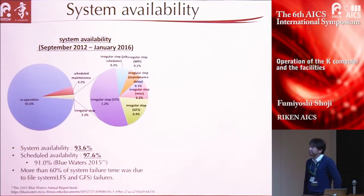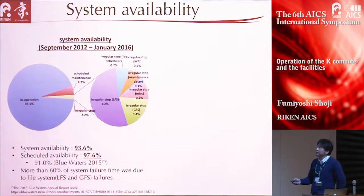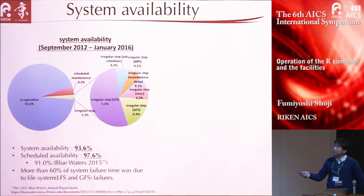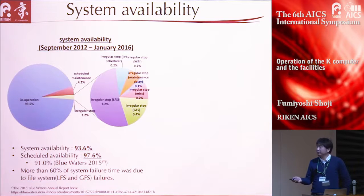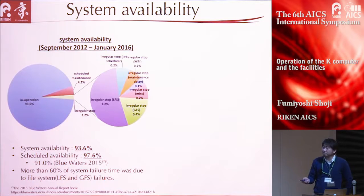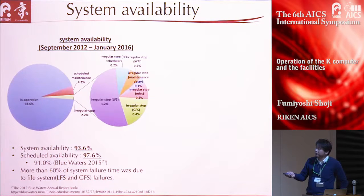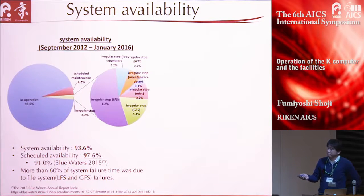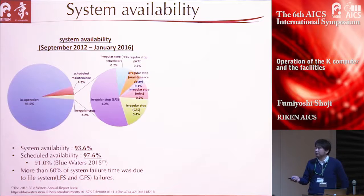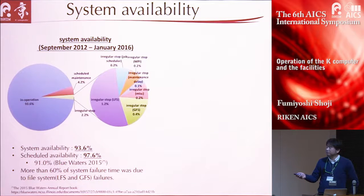I will show the system availability of the K-computer. This pie chart shows the system availability. The K-computer achieved 93.6% system availability and 97.6% scheduled availability. According to the annual report of Blue Waters, it achieved 91% for 2015. More than 60% of system failure time was due to file system failure.